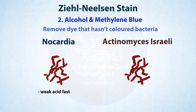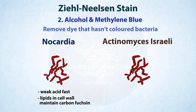Nocardia is a weak acid-fast bacterium, which indicates that a less concentrated alcohol solution is required for staining since the mycolic acids in its cell wall are of intermediate length. Because it contains a lot of lipids in its cell wall, it maintains the carbol-fuchsin and appears red under a microscope, making it an acid-fast bacteria. On the other hand, in bacteria with few lipids in their cell walls, such as Actinomyces israelii, all of the red dye is washed away by alcohol, resulting in a blue appearance under the microscope, indicating that it is a non-acid-fast bacteria.